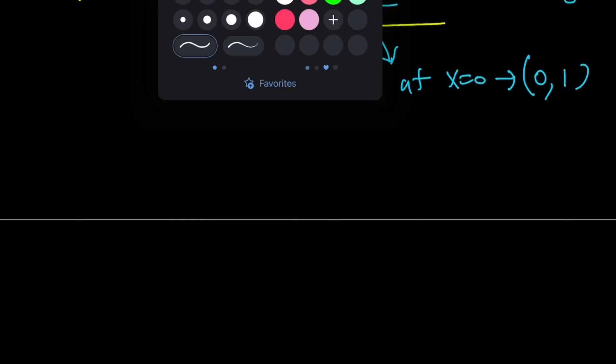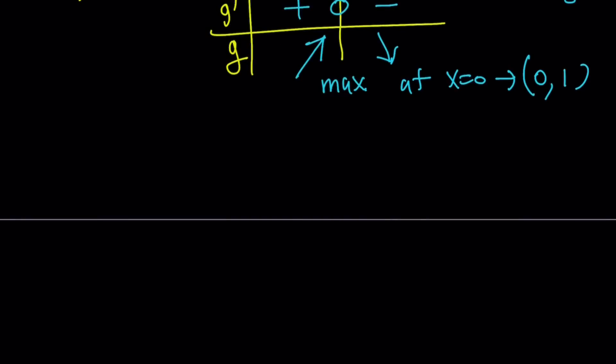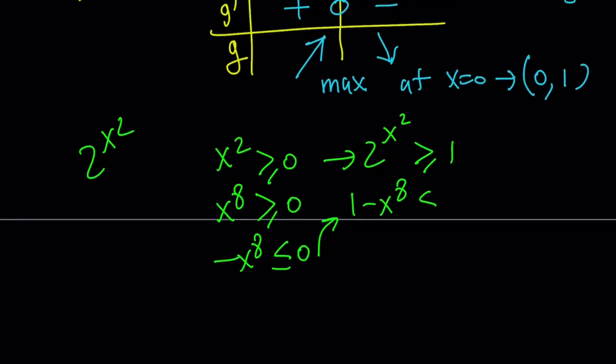We can also look at it differently. We can have a different approach here, such as look at 2 to the power of x squared. x squared is greater or equal to 0. That means 2 to the power of x squared is always greater or equal to 1. We also know x to the 8th is greater or equal to 0. That means negative x to the 8th is less than or equal to 0. If you just add 1 to it, 1 minus x to the 8th is less than or equal to 1. So what does this tell you? We have two functions that are supposed to be equal at a point, but one of them is always greater or equal to 1. The other one is always less than or equal to 1. So they can only intersect at the y equals 1 value.